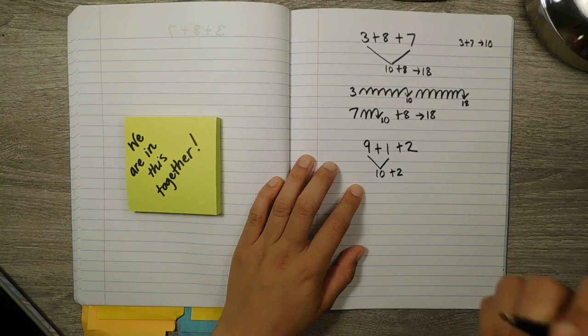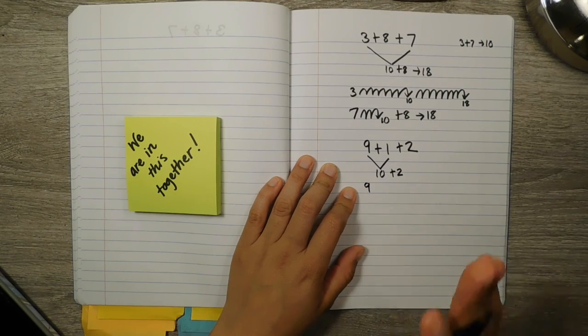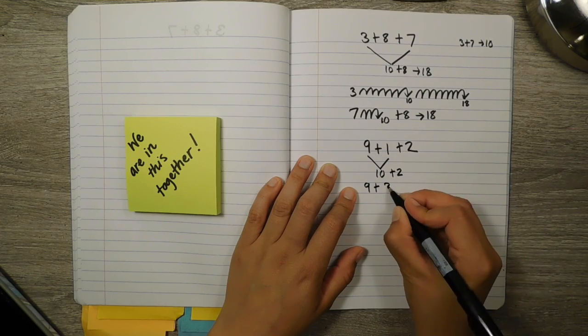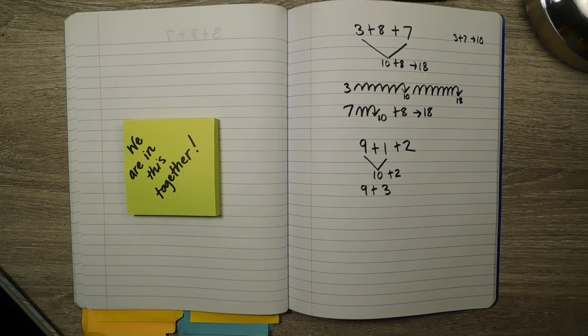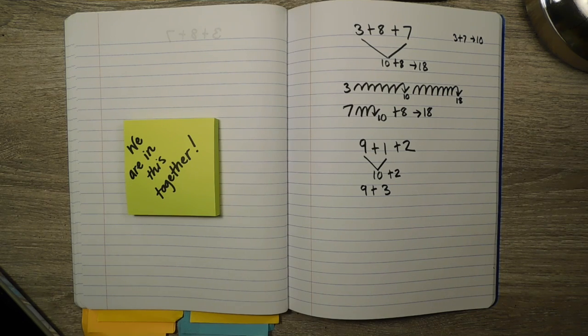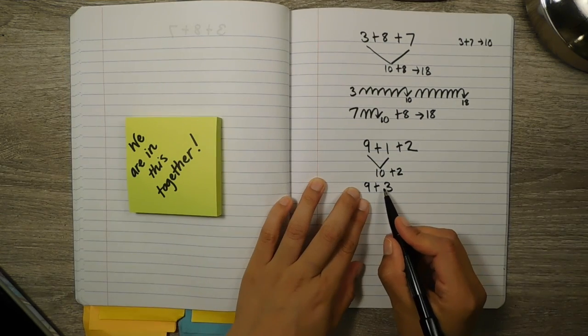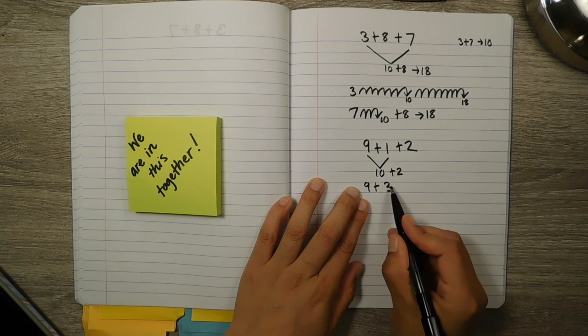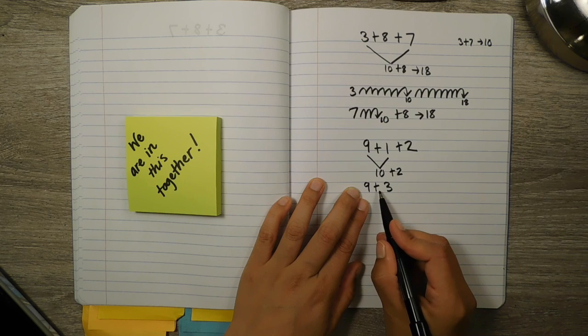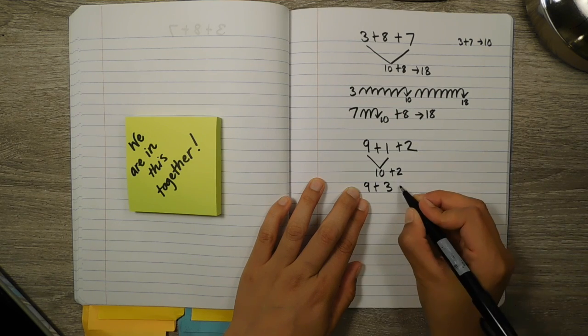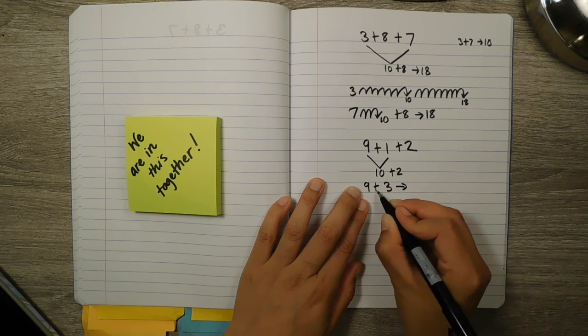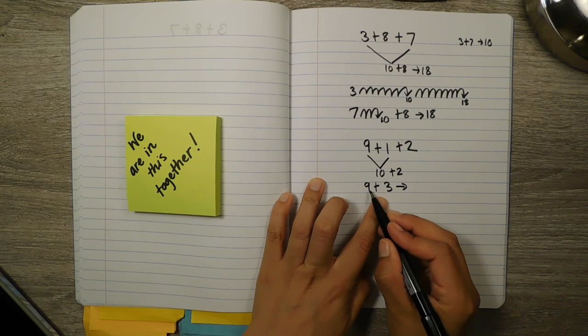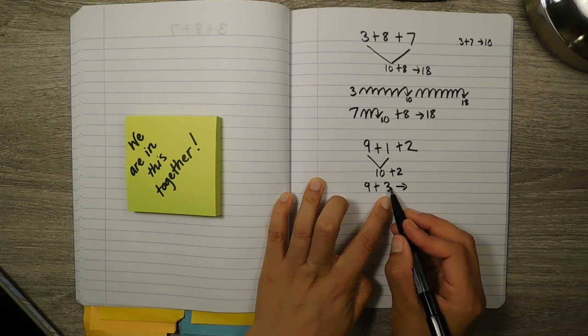But again, some of you might have done something different and that's okay. Maybe you did this where you had the 9, kept it, and actually added the 1 and the 2 because maybe you know the trick with 9s where you have number facts with 9s already. And you know that if you simply look at the last number, then you know that the digit that's going to be in the 1s place when adding 9s is just going to be 1 less. So what I mean is that if you take this number sentence, 9 plus 3, then you look at this digit that you're adding to the 9, you take away 1, so that would be 2.